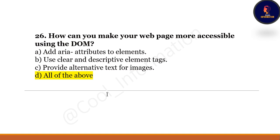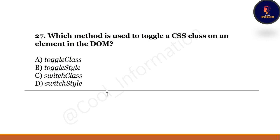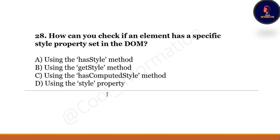Next question: Which method is used to toggle a CSS class on an element in the DOM? Option A: toggleClass. Option B: toggleStyle. Option C: switchClass. Option D: switchStyle. The correct option is A — toggleClass. Next question: How can you check if an element has a specific style property set in the DOM? Option A: hasStyle. Option B: getStyle. Option C: hasComputedStyle. Option D: style property. The correct option is B — using the getStyle method.